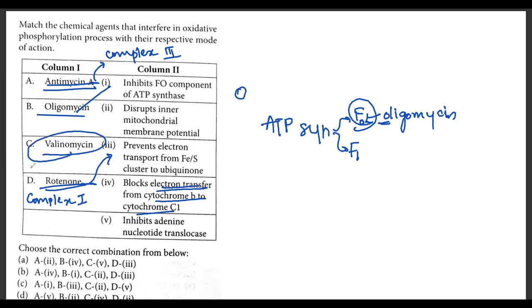Finally, valinomycin. Valinomycin is an ionophore. It acts like a shuttle. It allows another alternate route for H pluses to pass rather than through the ATP synthase. So it disrupts inner mitochondrial membrane potential.